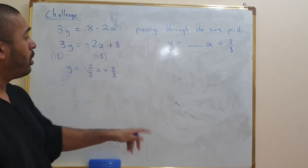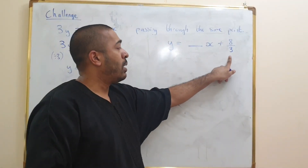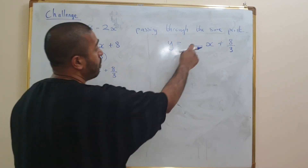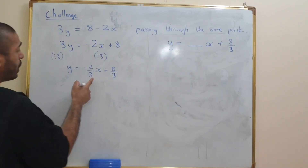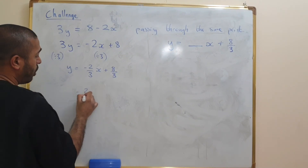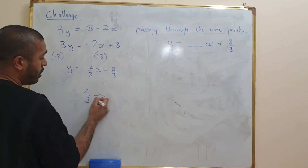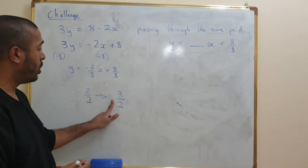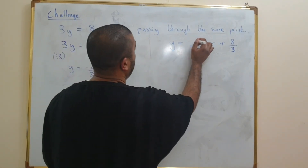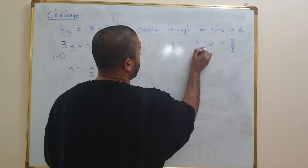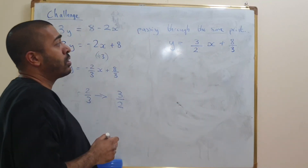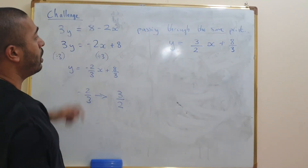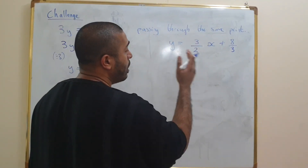We're using the same y-intercept as instructed. All we need now is the gradient. The gradient of the original line is negative 2 thirds, so the negative reciprocal is going to be 3 over 2. Since the original is negative, this one is going to be positive. Therefore, the final equation of the perpendicular line is y equals 3 over 2 x plus 8 thirds.